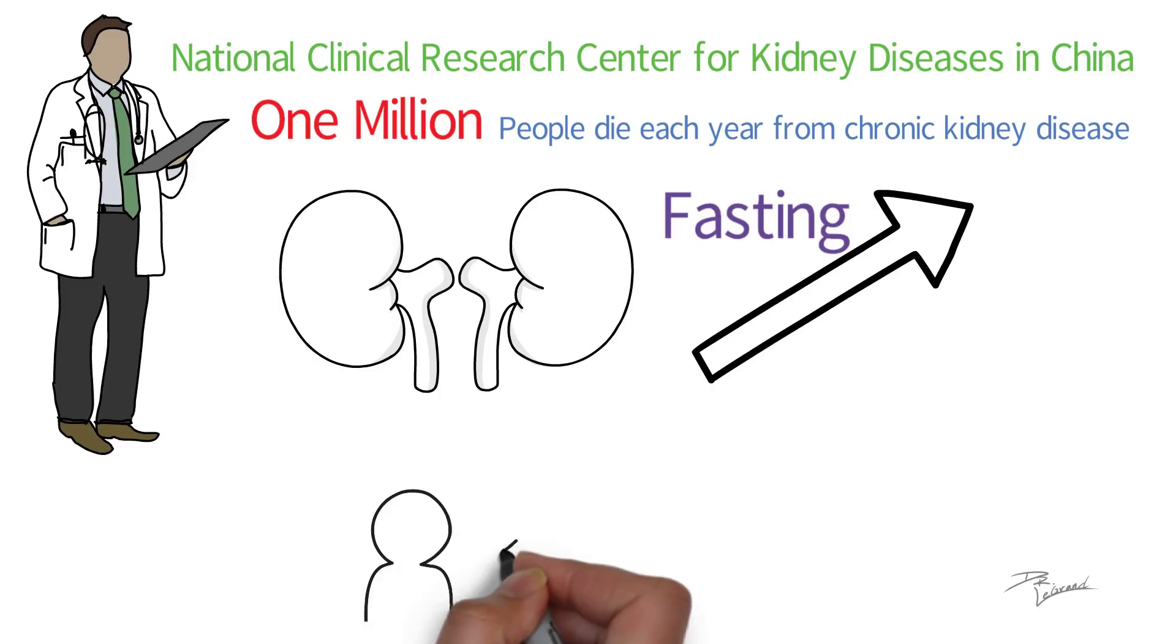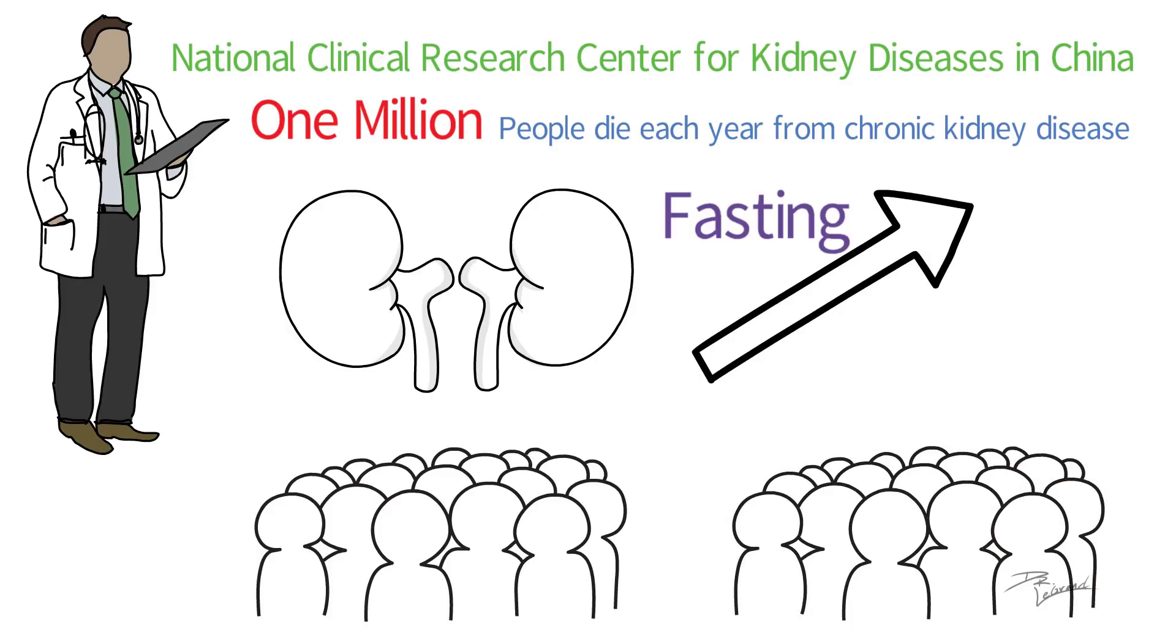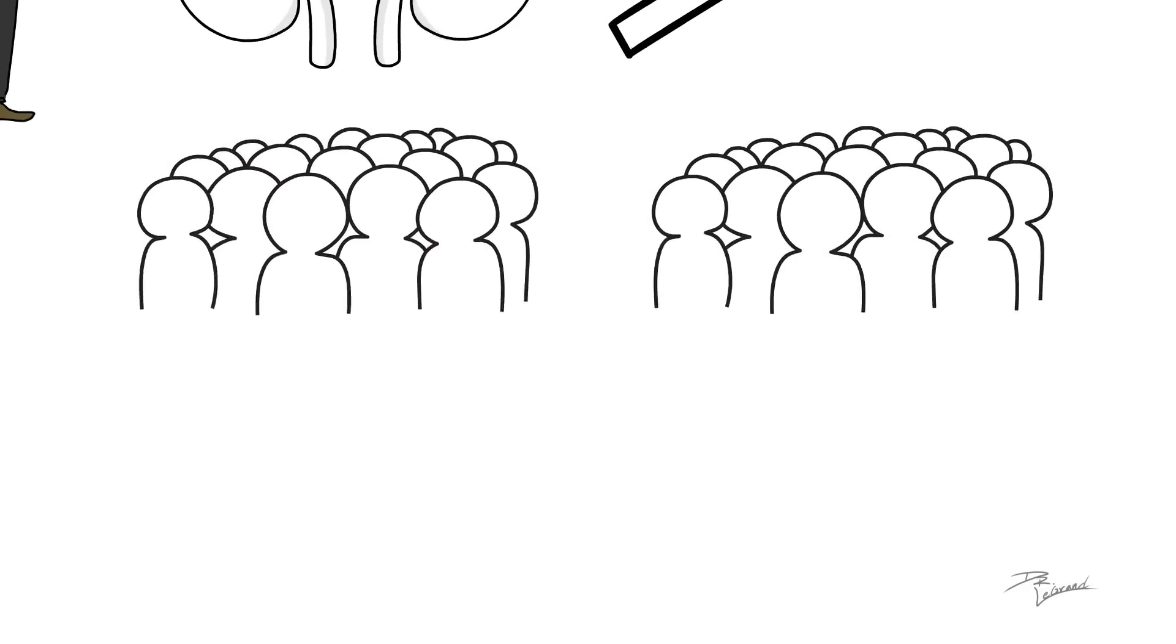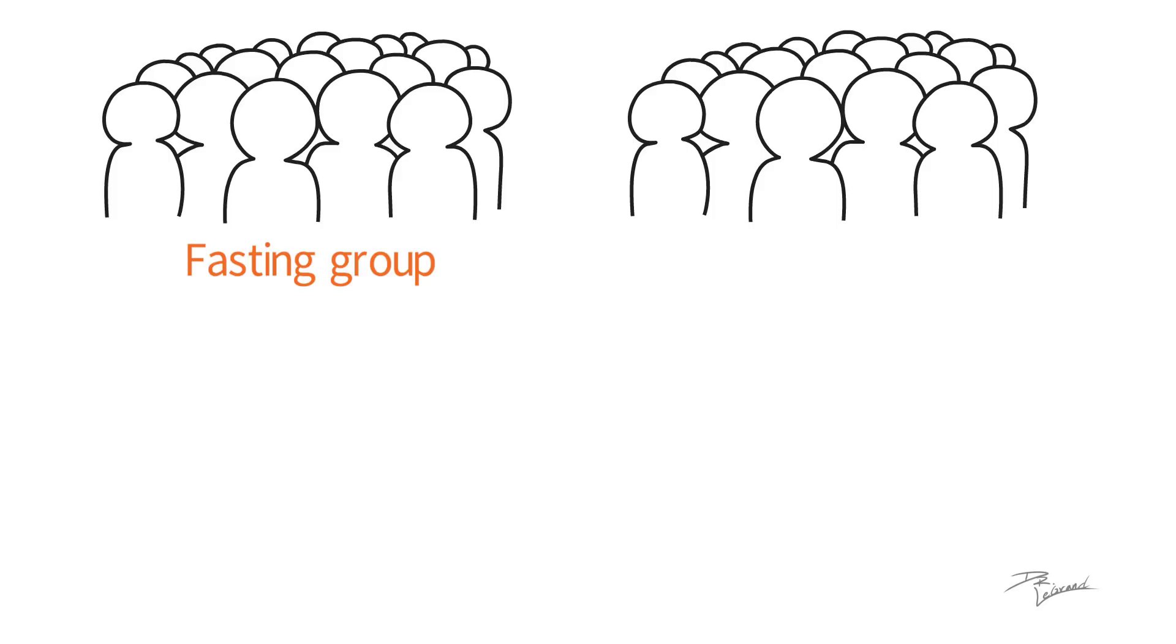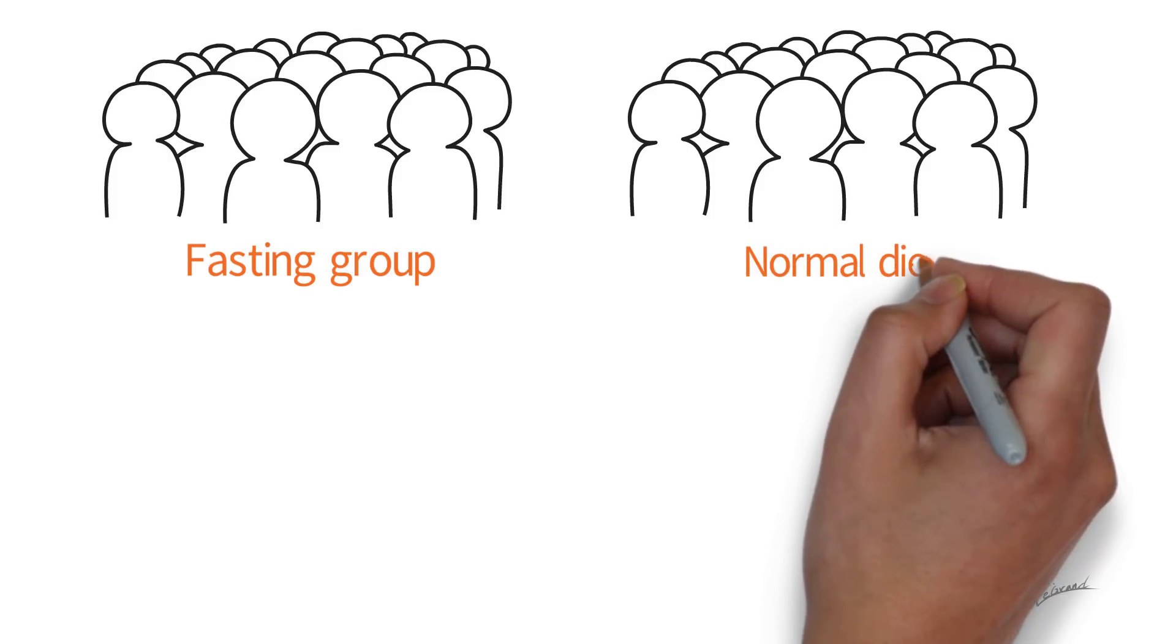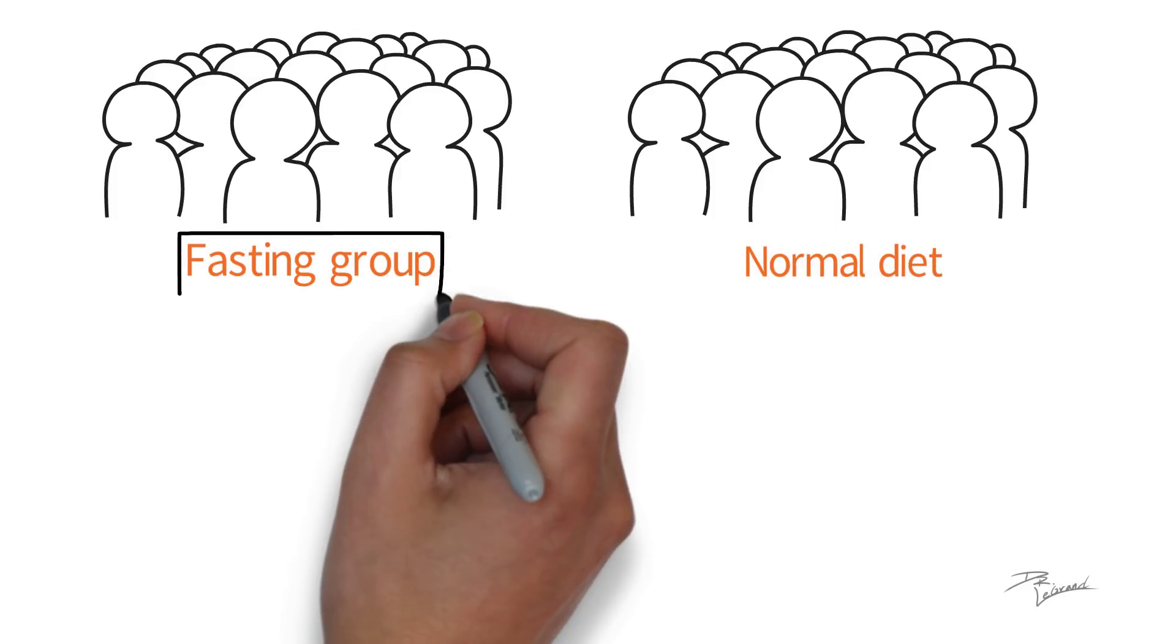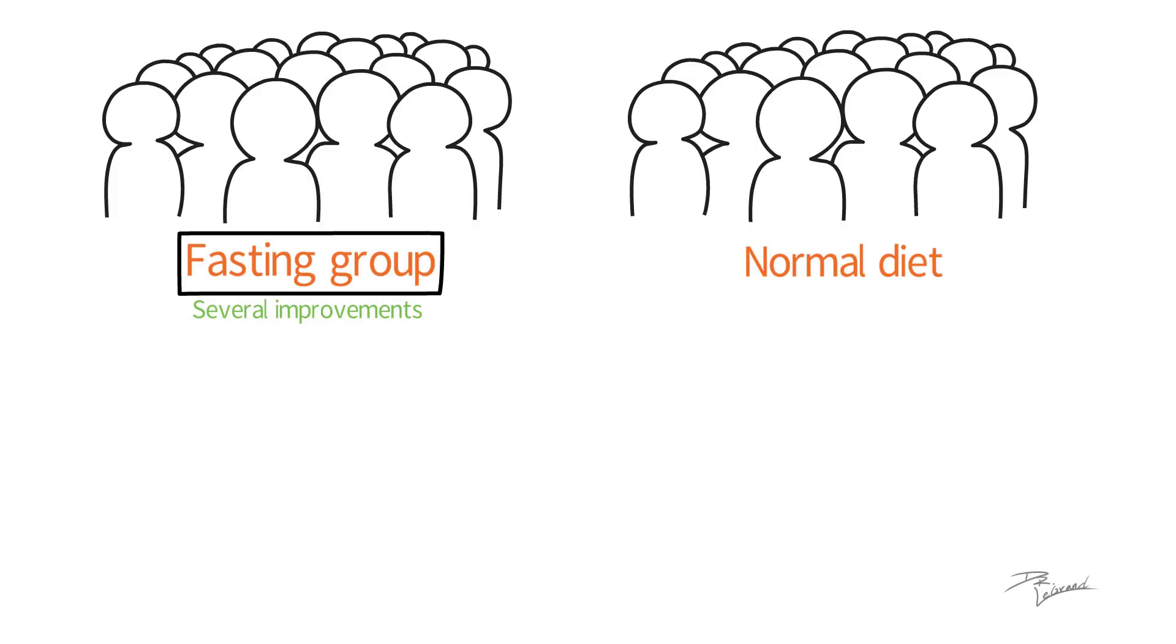Two groups of participants were involved in the study. One group were provided with a program that had a 60% restriction in caloric intake on certain days. This was the fasting group. The other group was fed a relatively normal diet. Following the study period, several improvements were seen in those who were on the fasting program.